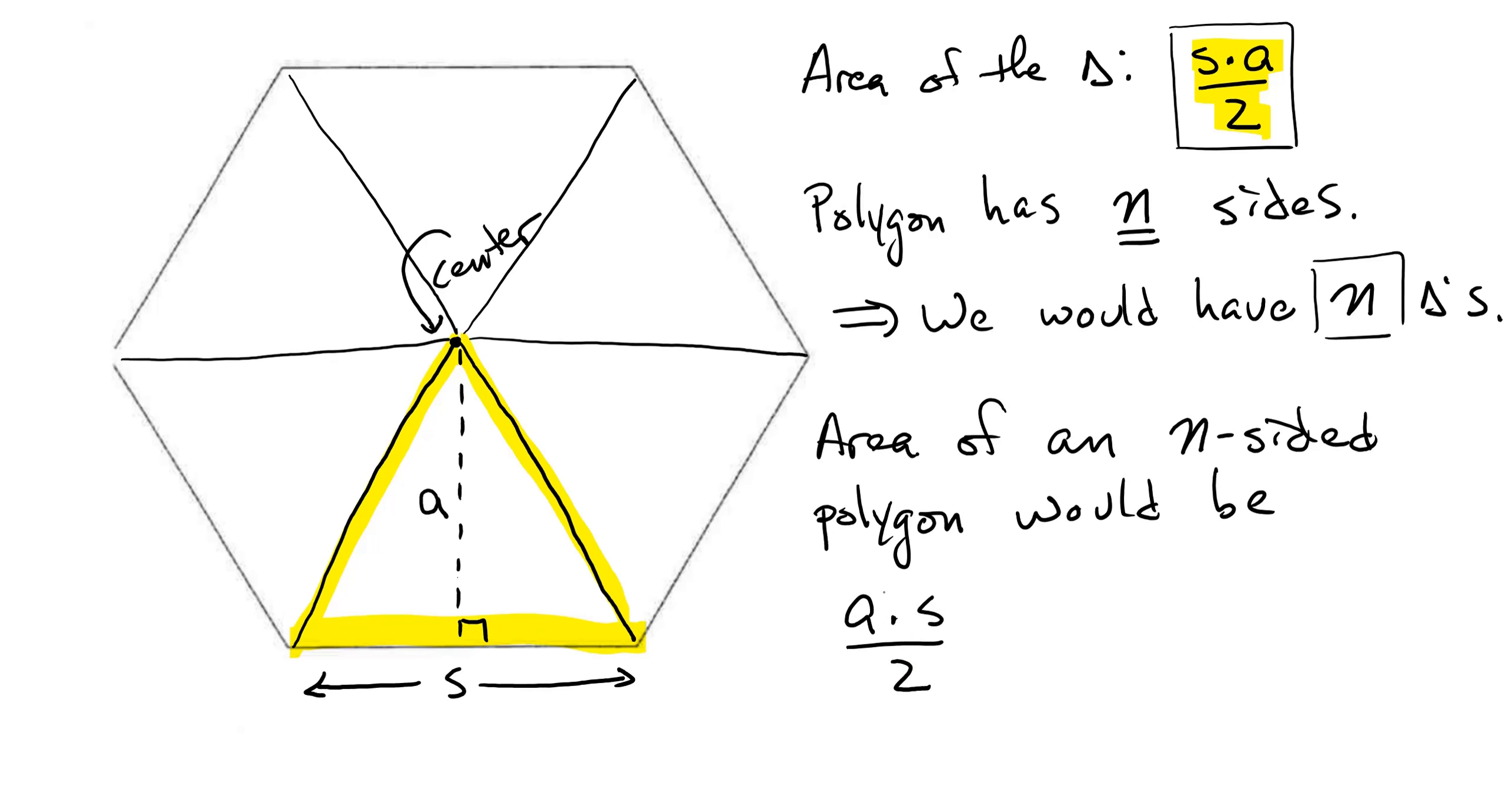I just switched the A and the S, doesn't really matter what order you put it in, times the number of triangles that you would have. Or we could write this as A times S times N divided by 2. Remember that A times S divided by 2, that's just the area of one triangle. Multiply it by how many triangles there are and you would get the area of the whole polygon.